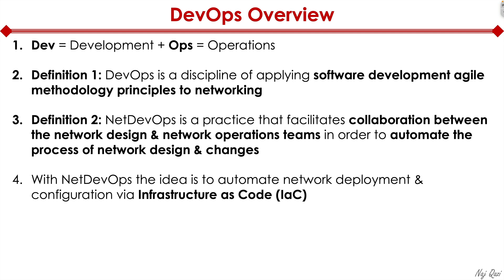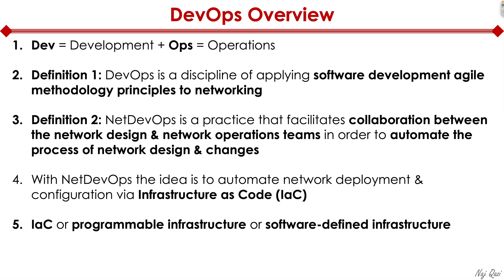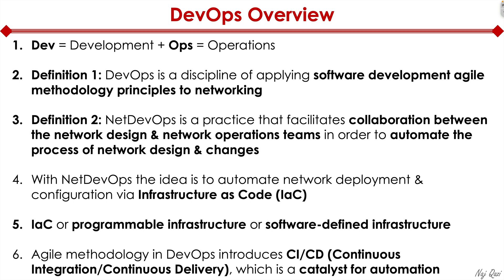What that eventually leads to is what we call infrastructure as code — a buzzword. You may also hear other terms interchangeably used with infrastructure as code, such as programmable infrastructure and software-defined infrastructure. The agile methodology in DevOps introduces what's called the CICD pipeline, which is a catalyst for automation.